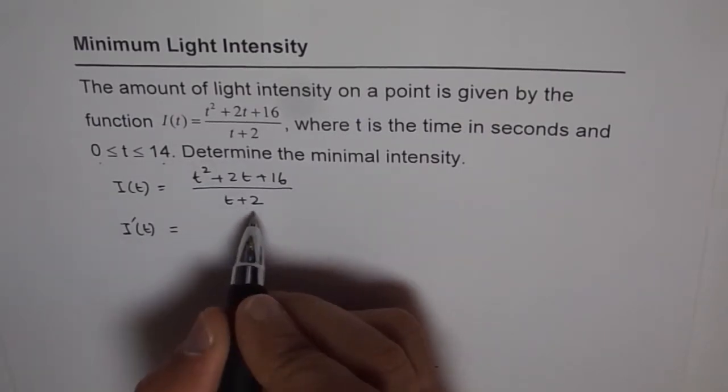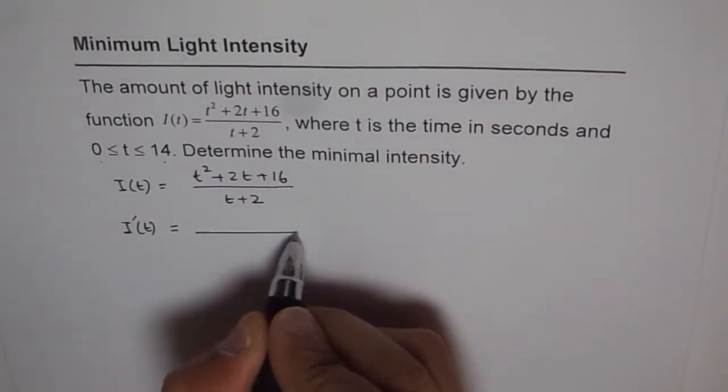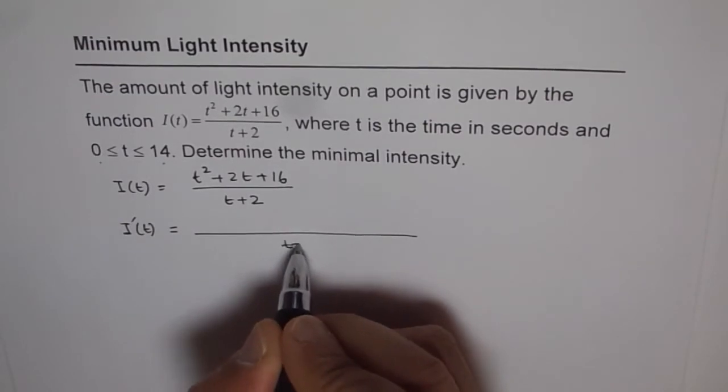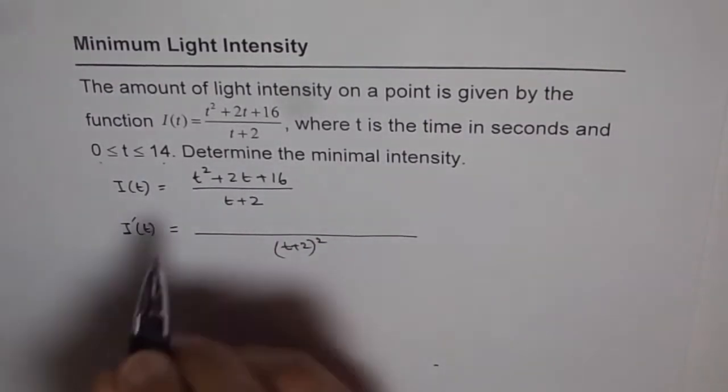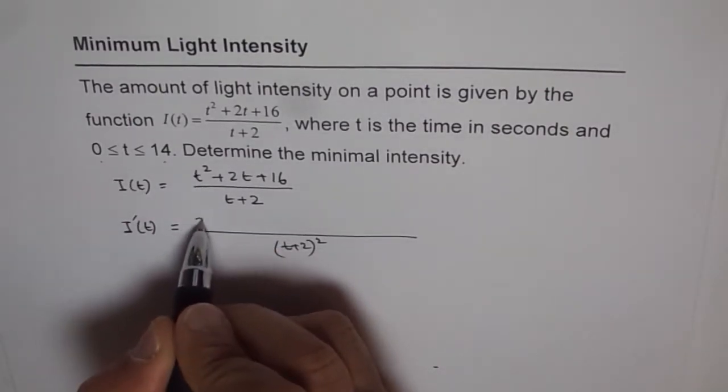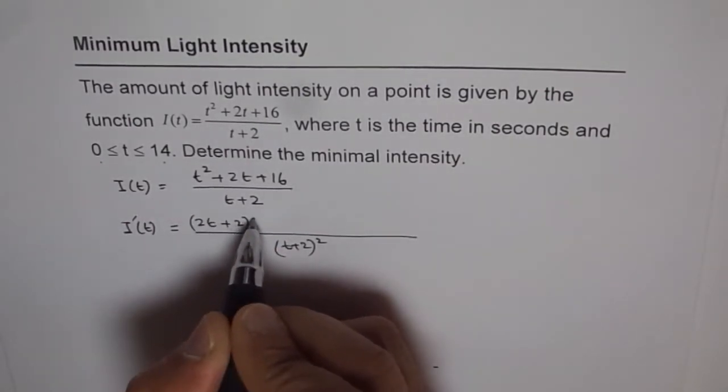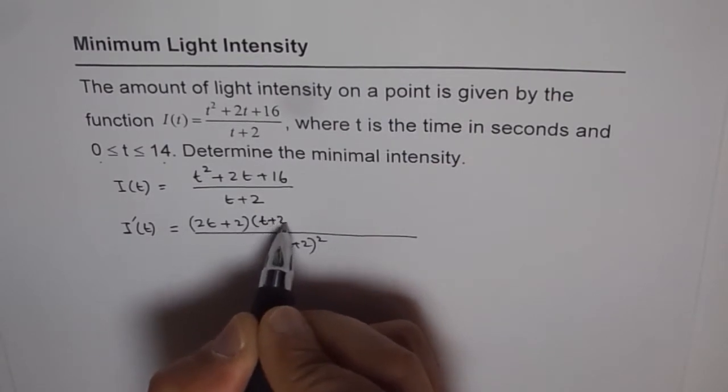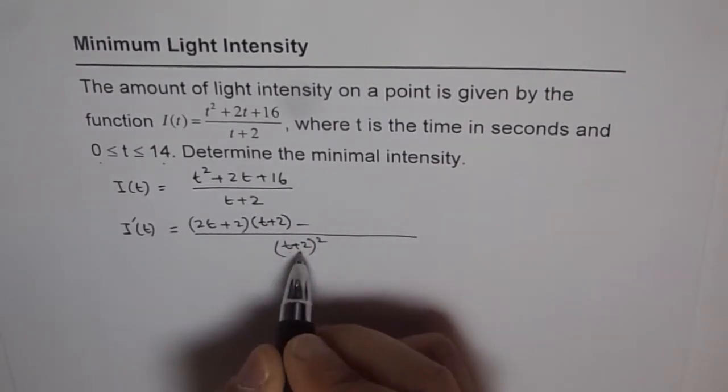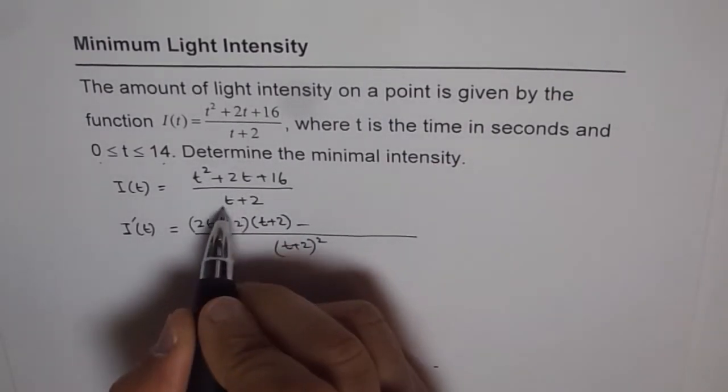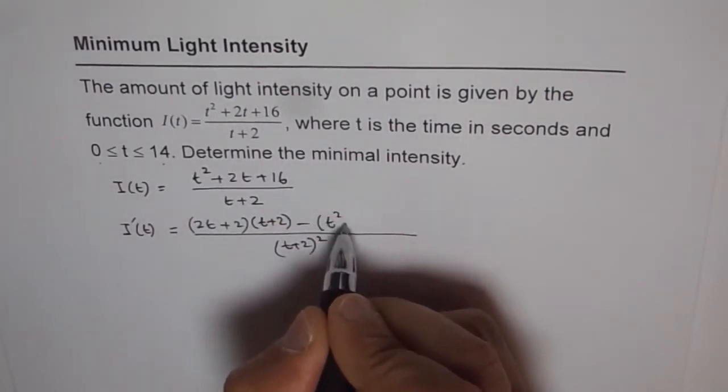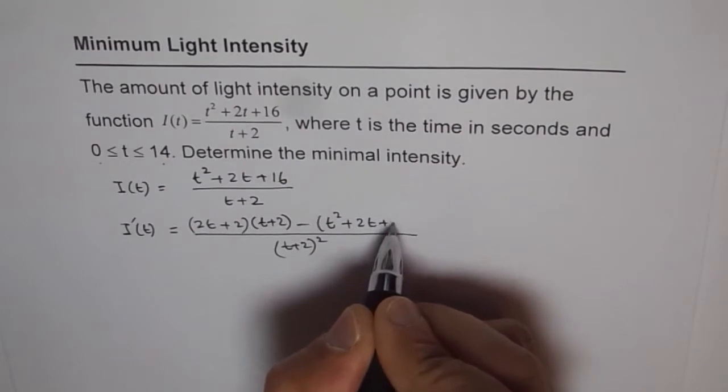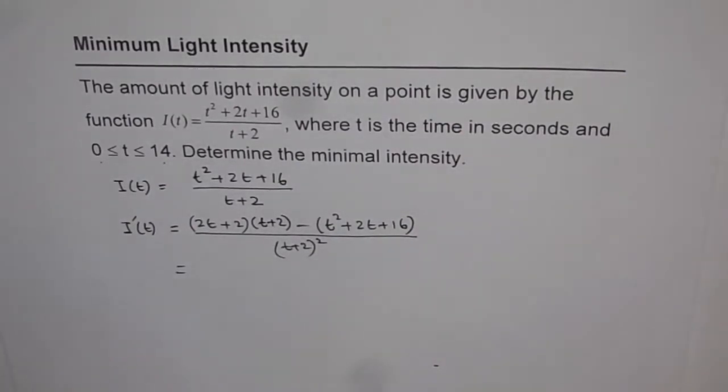Okay, so derivative will use quotient rule here. So we have t + 2 in the denominator with square. Derivative of the first term here is 2t + 2 times t + 2 minus. So derivative of denominator is just 1 times t² + 2t + 16. Now we can simplify this and then write down our answer.